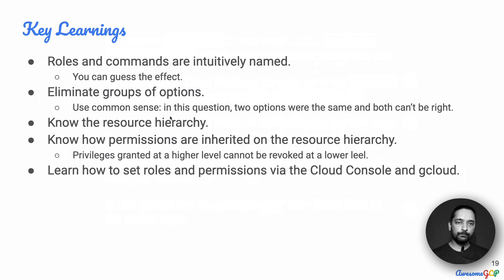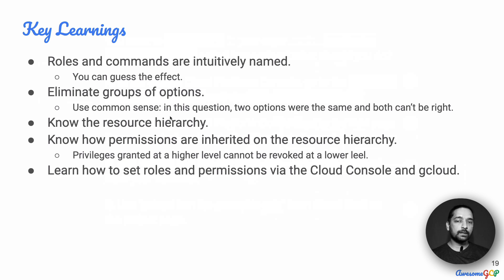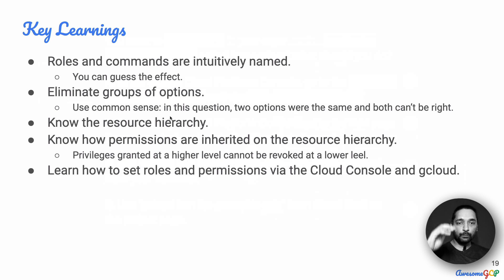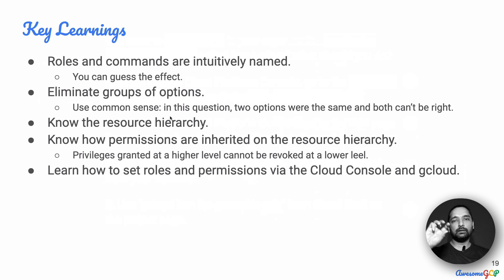What are the key learnings from this question? One — looking at list-grantable-roles, we can see that gcloud roles and commands are intuitively named; you do not need to know all of them, but you can guess what they mean by looking at the name. Two — it is a good approach to eliminate groups of options. In this case, we looked at two options that were essentially the same, and since both cannot be right, we eliminated both. Three — know the resource hierarchy: organizations, possibly folders under that, projects, and within those all the resources. You also need to know how permissions are inherited — any privilege granted at a higher level cannot be revoked at a lower level. So if someone gets a permission at the organization level, you cannot revoke it at the project level.